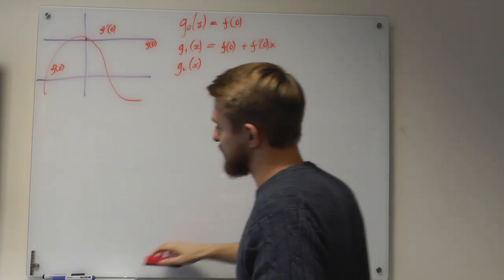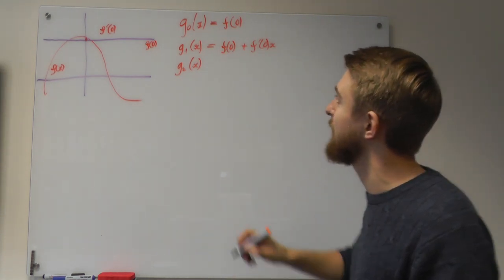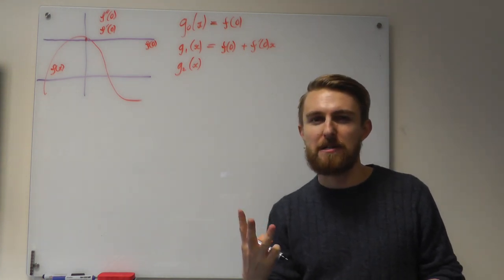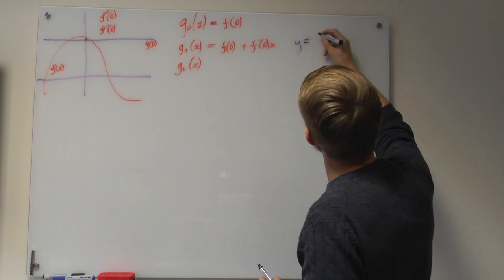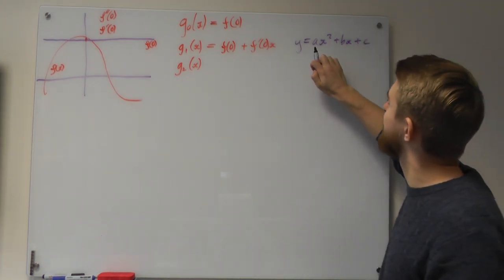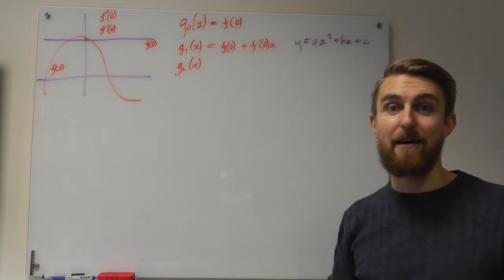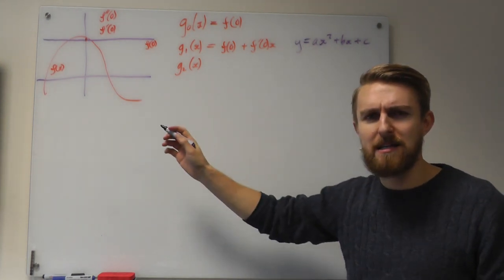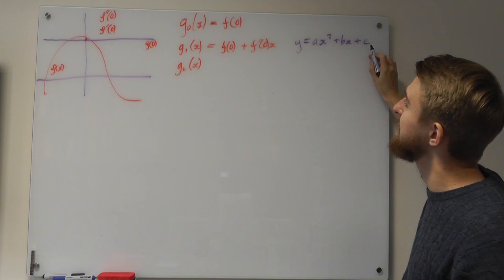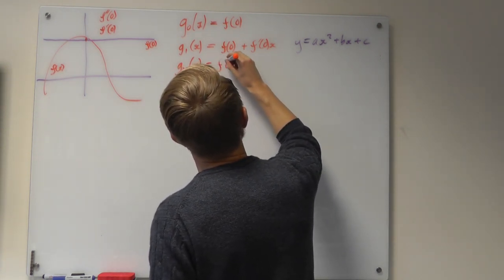For our second-order approximation, we're going to use three pieces of information: the y-intercept, the first differential, and the second differential — f double prime evaluated at 0. Anything with these three pieces of information is a curve of the form y equals ax squared plus bx plus c. We need to find the three coefficients a, b, and c. Our new guess must have the correct y-intercept: at x equals 0, only c remains, so c equals f of 0.